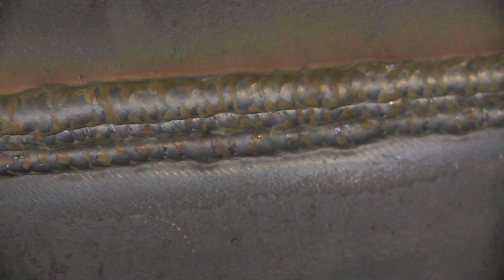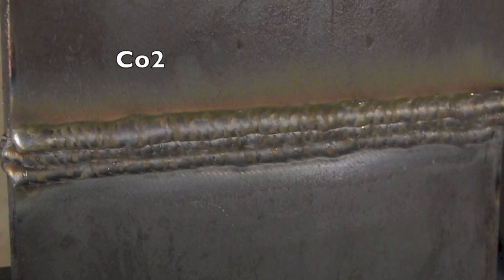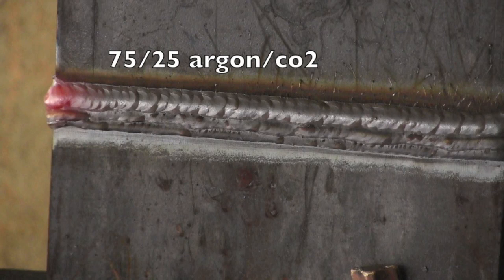And then we got our plate welded out with straight CO2. A three bead cover pass with straight CO2. Well, now the thing is to lay them out, lace straps out and cut them and bend them and see what they look like.